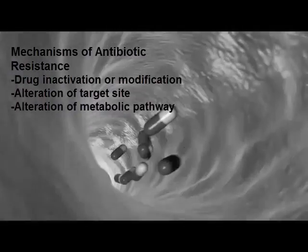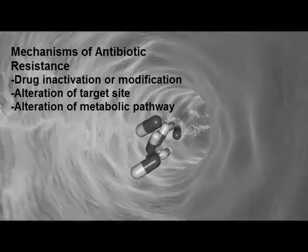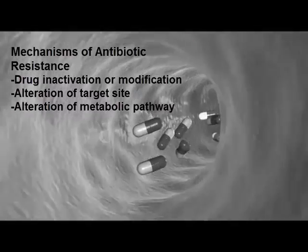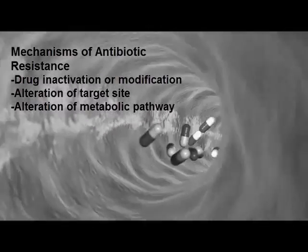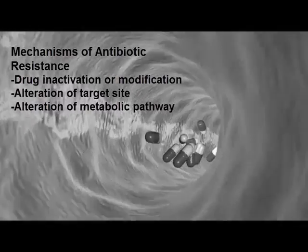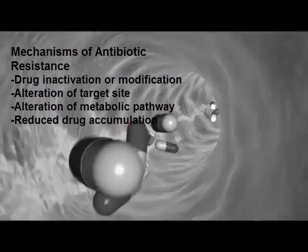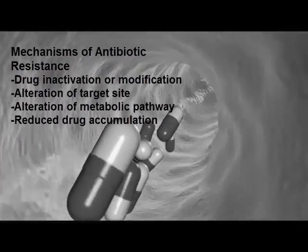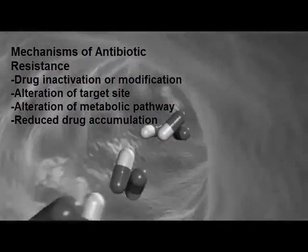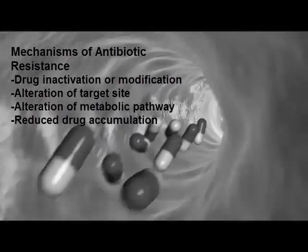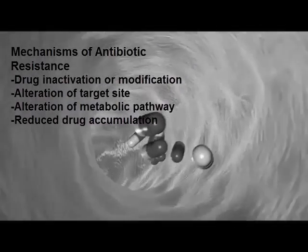The third is a change in the bacteria's metabolism. Here, bacteria will mutate to use a different set of building blocks to give the same product. Finally, the last way bacteria can acquire antibiotic resistance is by pumping the drug out of the cell before it gets a chance to work.